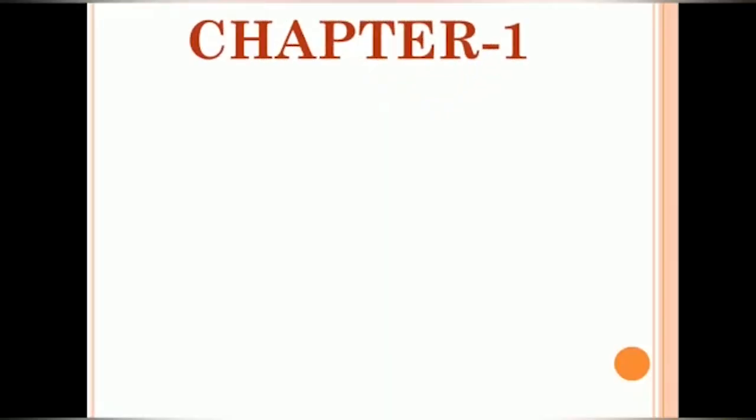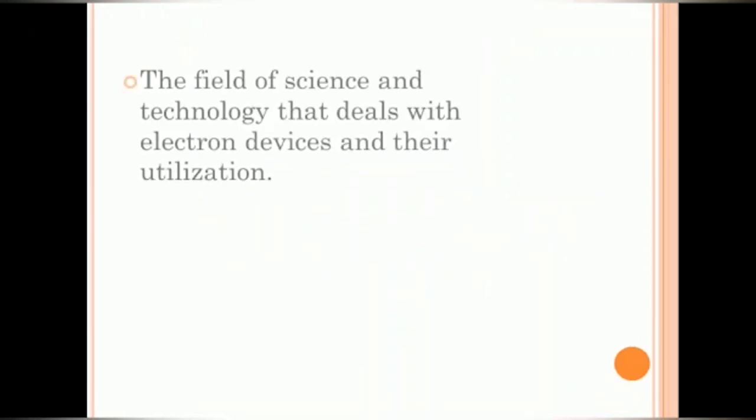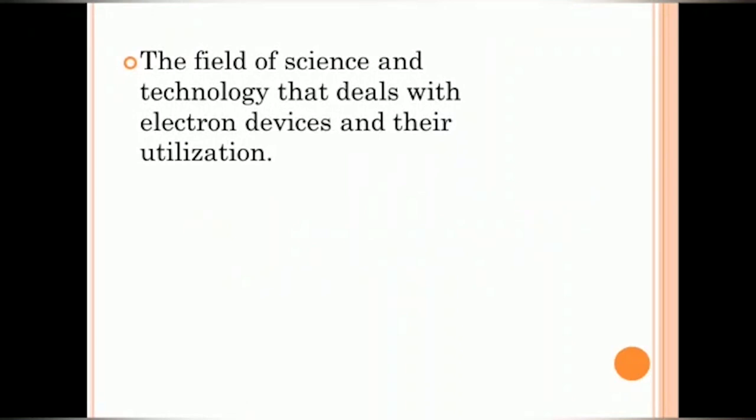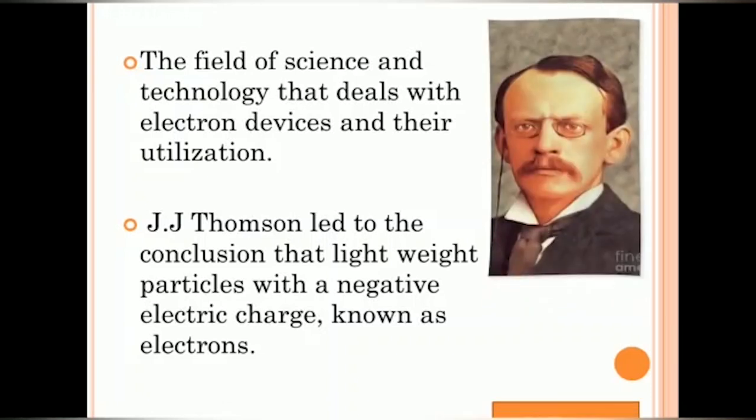And the 9th chapter introduces the Practical Electronic Components utilized in Circuits. Chapter 1 Introduction to Electronics is derived from Electron Mechanics. The field of science and technology that deals with electron devices and their utilization is defined as Electronics. Experiments with beams of negative particles were performed by JJ Thomson which led to the conclusion that they consisted of lightweight particles with negative electric charge known as electrons. You can see the image of JJ Thomson.